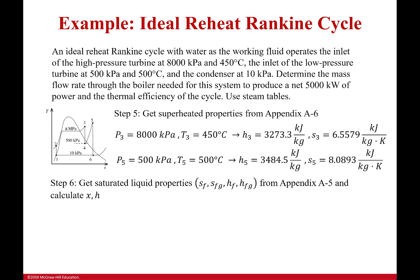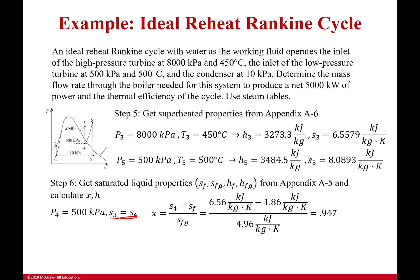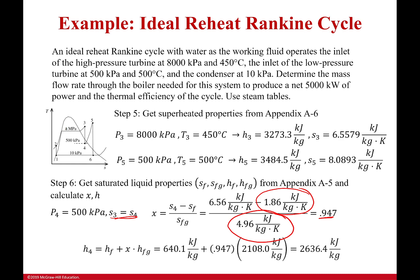Now we need values from Appendix A5 at 500 kilopascals and at 10 kilopascals. At 500 kilopascals, using the entropy that is the same at states 3 and 4, I look up SF and SFG from the table, then calculate the quality. From the quality I find the enthalpy: H4 = HF + x·HFG at 500 kPa. That gives HF = 640.1 kJ/kg, and the final result is H4 = 2,636.4 kJ/kg.